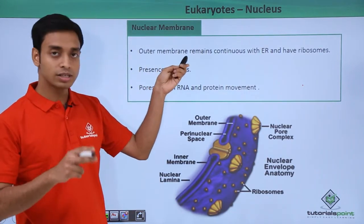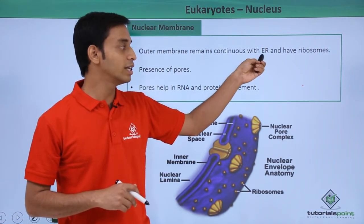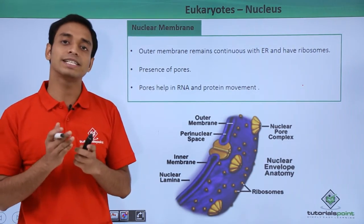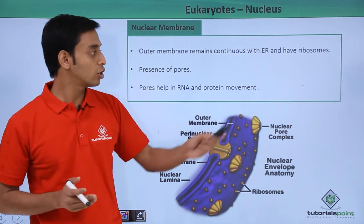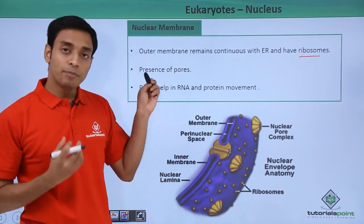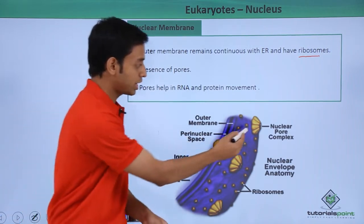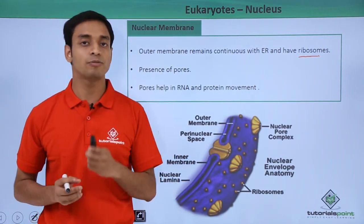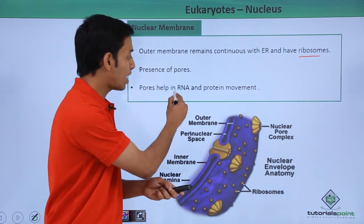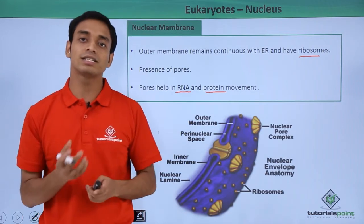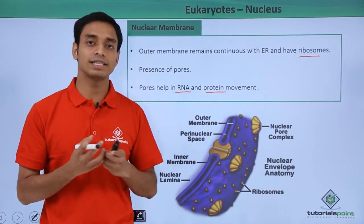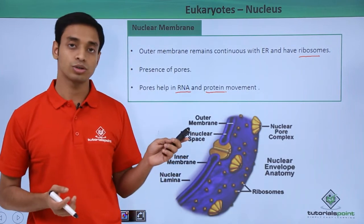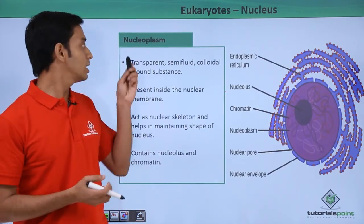The outer membrane of these double-layered membranes remains continuous with the endoplasmic reticulum — specifically the RER (rough endoplasmic reticulum), which has ribosomes on it. Importantly, this nuclear membrane has pores, as you can see — the nuclear pore complex. The function of these pores is to help in the movement of RNA and proteins synthesized inside the nucleus. The RNA formed inside the nucleus is transported to the cytoplasm via these pores.